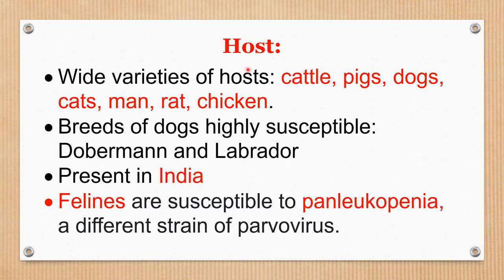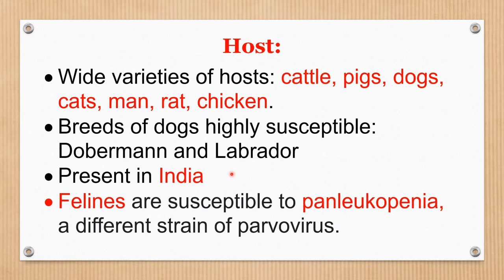Hosts affected by Parvo include a wide variety: cattle, pigs, dogs, cats, man, and rat. Of these, the highly susceptible species is the dog. Among dogs, the highly susceptible breeds are Doberman and Labrador. This disease is widely prevalent in India, observed in all states. Felines are susceptible to panleukopenia virus, which is a different strain of this parvovirus.